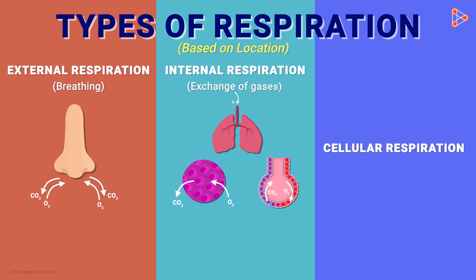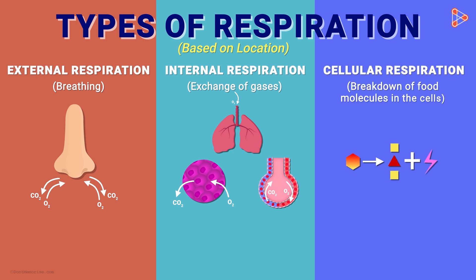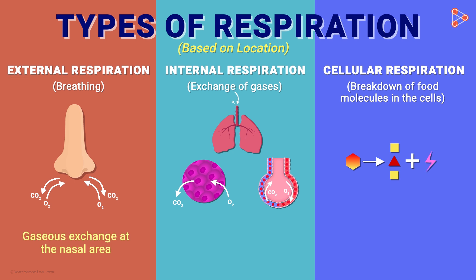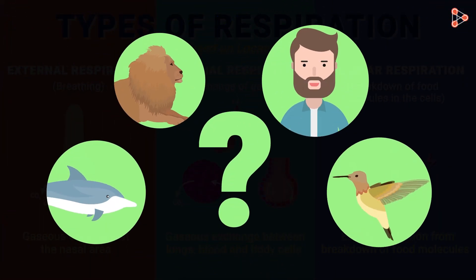The oxygen then travels throughout the body and is delivered to the cells, while carbon dioxide is similarly taken away. This exchange of gases occurring inside the lungs, blood, and cells is called internal respiration. Last is cellular respiration — the process in which oxygen is used to break down food molecules by the cells. To summarize: external respiration is gaseous exchange at the nasal area; internal respiration is gaseous exchange between the lungs, blood, and cells; and cellular respiration is restricted to the cells only.